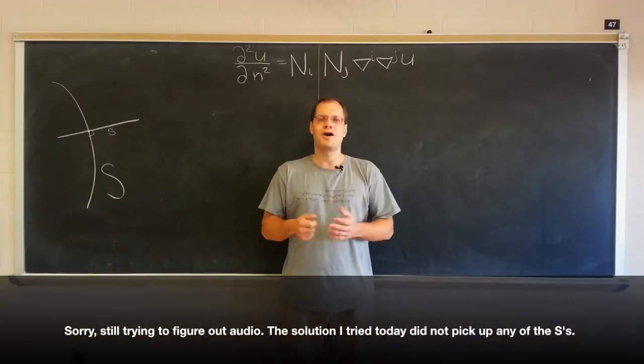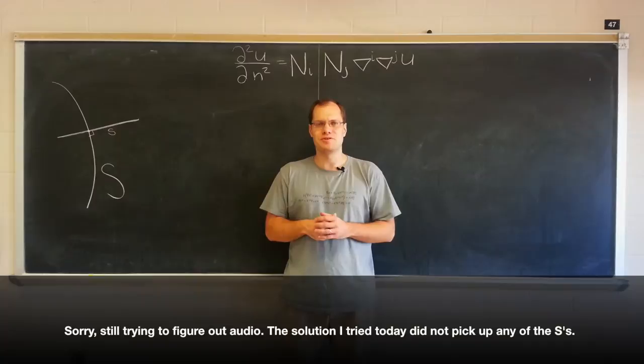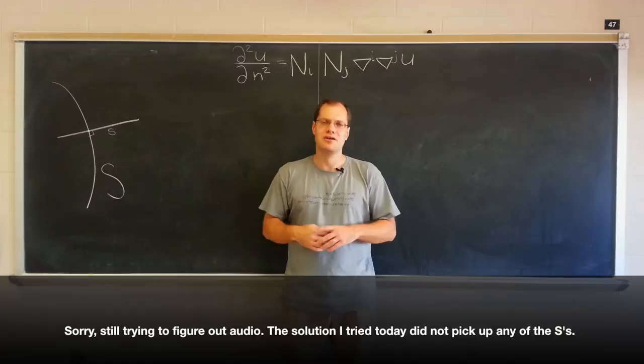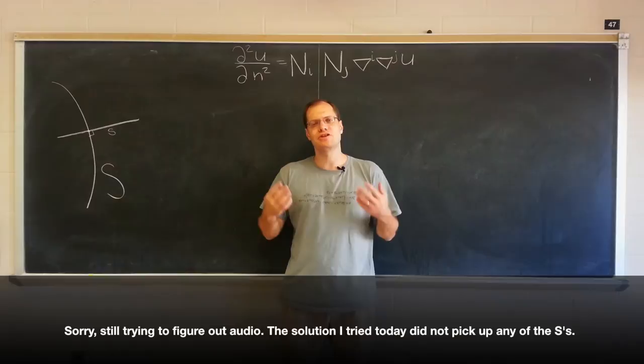As promised, I will give a clean derivation of the relationship you see above, concerning the second-order normal derivative of a function u defined in the entire ambient space. This will be a general derivation. We've derived this expression before, but we did it by assuming that we introduced a Cartesian coordinate system in the ambient space. It was a clean proof, but somewhat distasteful given the framework of tensor calculus.